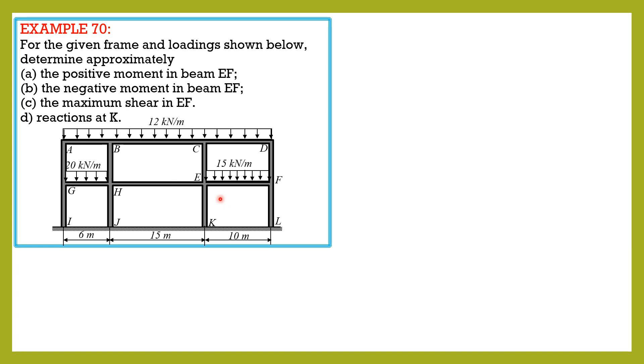For positive moment in EF, it is 0.08WL² where W is 15 kilonewtons per meter and length is 10. That formula was derived in the lecture videos for this approximate analysis of frames due to gravity loads. So MEF positive is 0.08 times 15 times 10², so the positive moment in beam EF is equal to 120 kilonewton-meters.